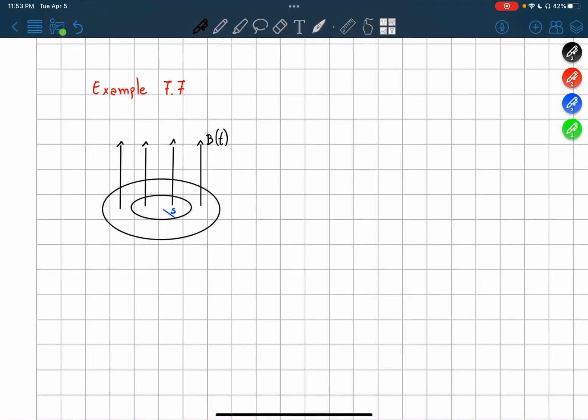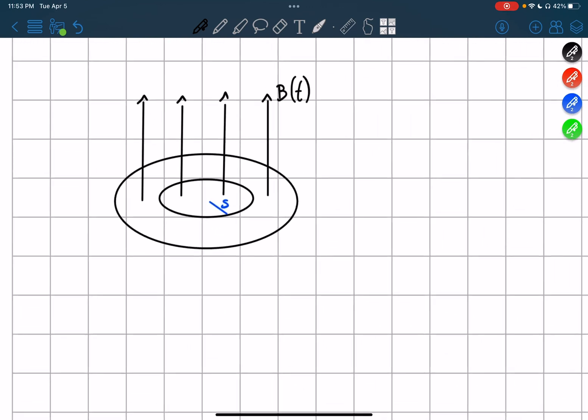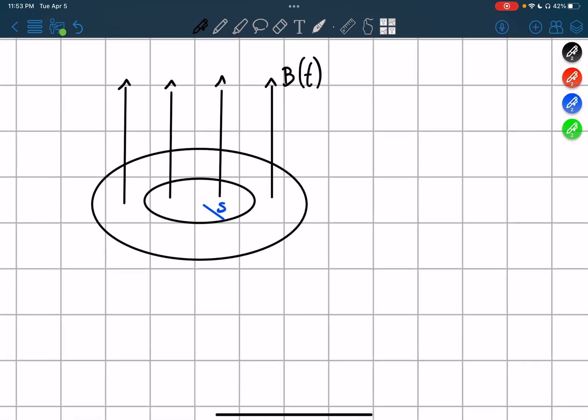How about it? So in this example 7.7 we have a loop with a changing magnetic field pointing upwards and then we drew inside an apparent loop of radius s and we're trying to find the electric field that is caused by this.